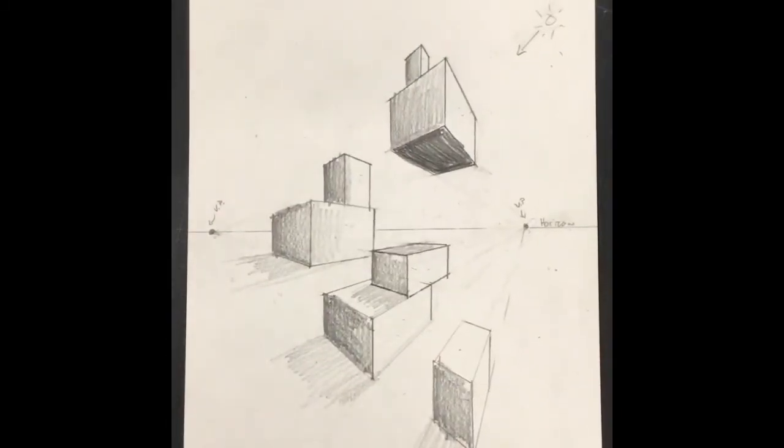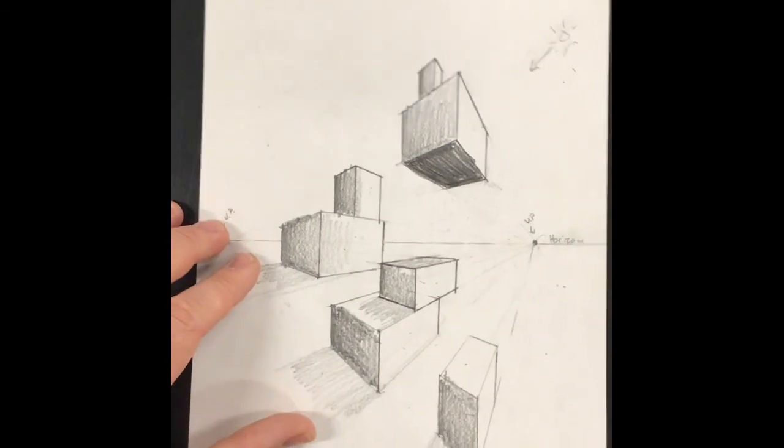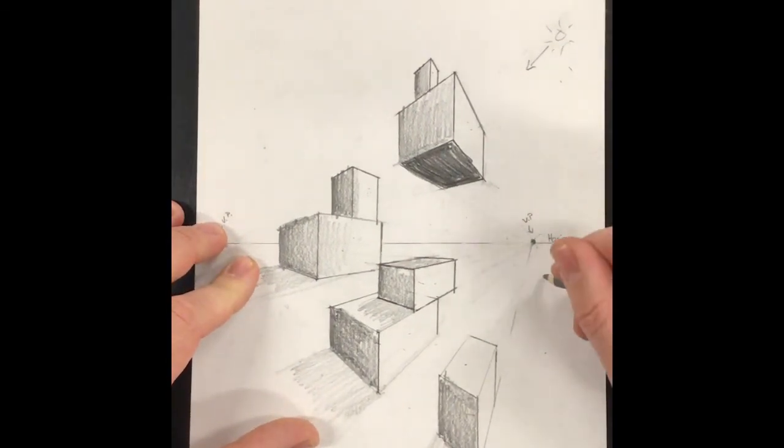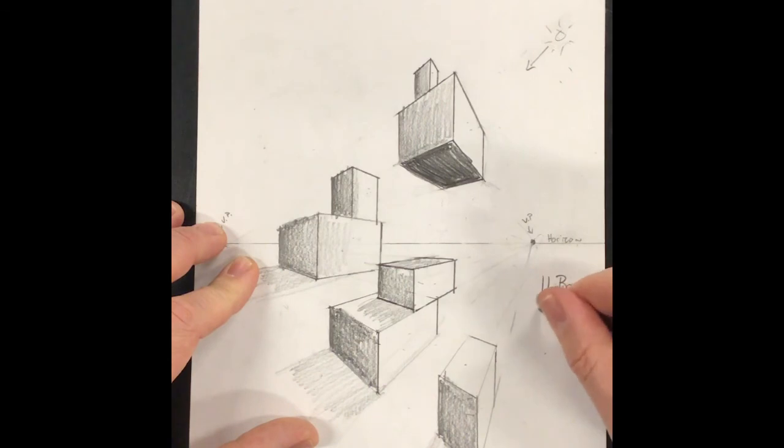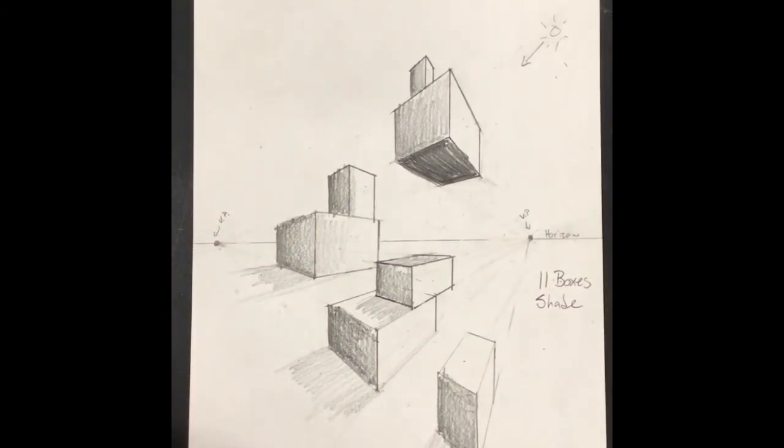And there you have it—drawing in two-point perspective and shading your forms. For you guys, I need you to create 11 boxes and you need to shade them according to a light source. That's your assignment you're going to be working on.